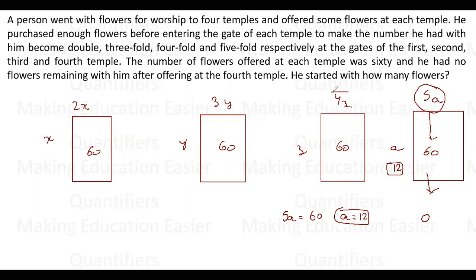Which means the flowers at this point before entering was 72, out of which he gave 60 to the temple and was left with 12. Which means 4z is equal to 72, z is equal to 18. So he reached the temple with 18 flowers, made it 72, devoted 60, and was left with 12.